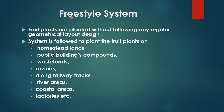Free style system. Fruit plants are planted without following any regular geometrical layout design — no design is followed. This system is used to plant fruit plants on homestead lands, public building compounds, waste lands, ravines, along railway tracks, river areas, coastal areas, factories, etc.